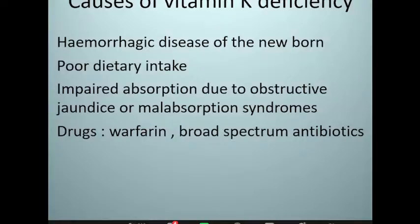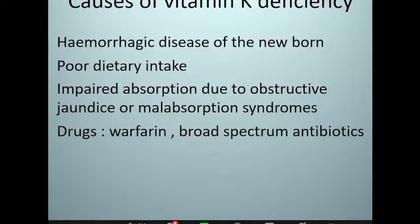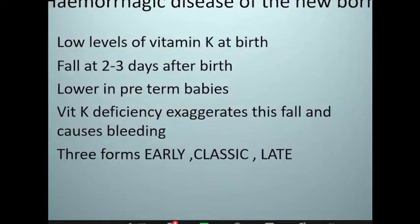A similar effect is seen with broad-spectrum antibiotics, which clear out bacteria in the gut that synthesize vitamin K, producing a vitamin K-like deficiency with prolonged use. Coumarin derivatives like warfarin are vitamin K antagonists that prevent gamma-carboxylation of vitamin K-dependent factors. In hemorrhagic disease of the newborn, vitamin K levels are low at birth — after birth the gut gets colonized and bacteria begin synthesizing vitamin K, so levels return to normal. They usually fall at two to three days after birth, more pronounced in preterm babies.